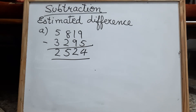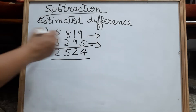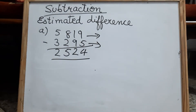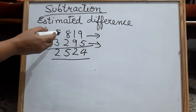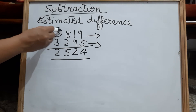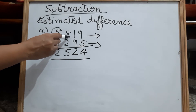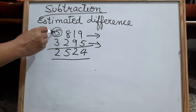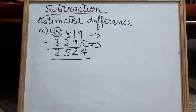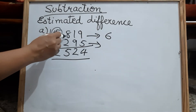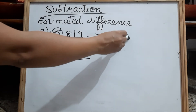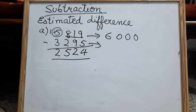Now estimate the numbers. I have already told you how to do estimation in the previous video, but once again I am going to explain here. At the thousands place, just check the right side number. If the right side number is more than 5 or equal to 5, you have to add 1 in the required place. So this becomes 6, and the rest of the 3 digits will become 0. So 5819 is estimated to 6000.